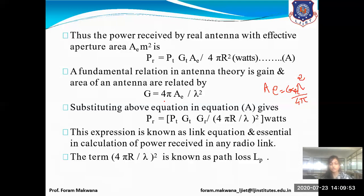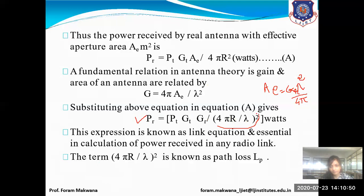The link equation is essential for calculating the power received in any radio link. The received power depends on: transmitting power, gain of transmitting antenna, gain of receiving antenna, the distance between transmitting and receiving antenna, and its wavelength. The term (4πr/λ)² is called path loss.